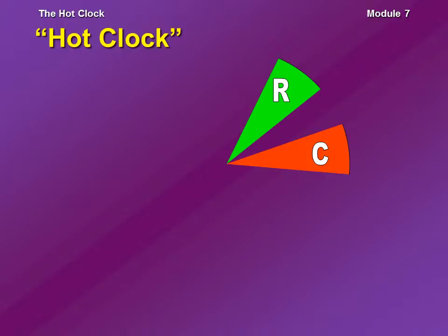Again, depending on the format, that recurrent song might be a few months old, or it might be a year or so old. There's a tendency for AOR and alternate rock stations to play considerably older songs when compared to the age of songs at a contemporary hit radio station, or even a rhythmic contemporary.